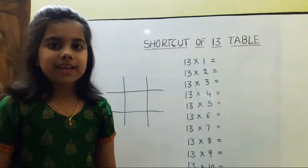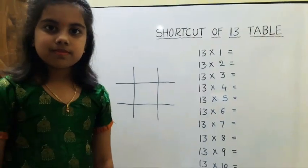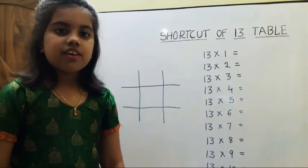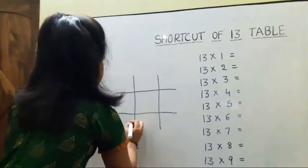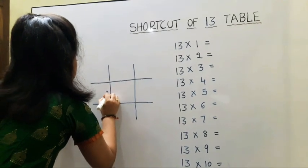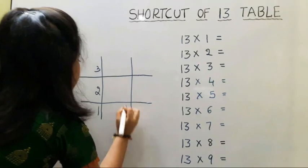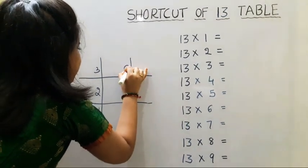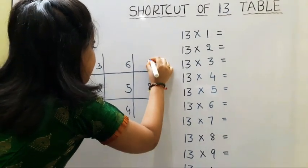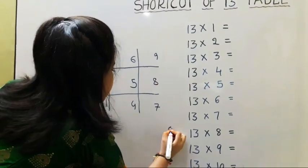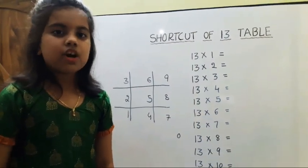Next I am telling about shortcut of 13 table. First we should write 12 to 9 numbers. Follow this order. Here we should write 0. Now we should write the numbers in this order.